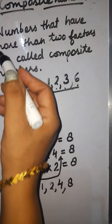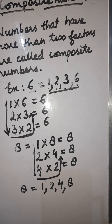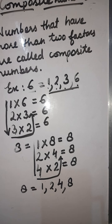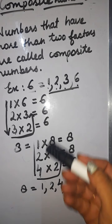To summarize: natural numbers are simply counting numbers starting from 1. Whole numbers are natural numbers including 0. Prime numbers have only 2 factors — 1 and the number itself. Composite numbers have more than 2 factors. These concepts have been explained with examples.